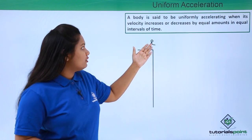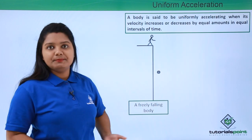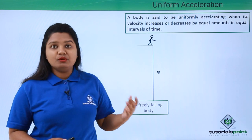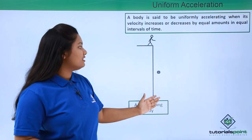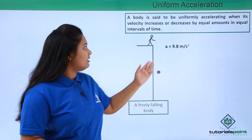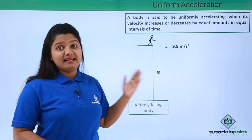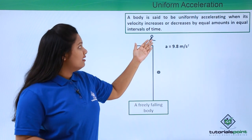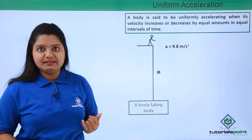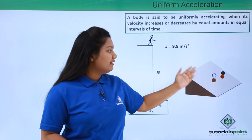Let us look at some examples of uniformly accelerated motion. When a ball is dropped from the top of a building, this motion is called free fall or a freely falling body. This ball is attracted towards the ground by the force of gravity. This motion is accompanied by a constant acceleration of 9.8 meters per second squared, known as the acceleration due to gravity, which is constant for any body falling towards the ground.